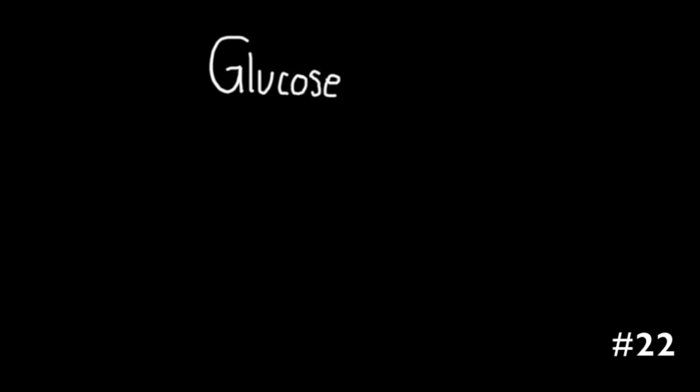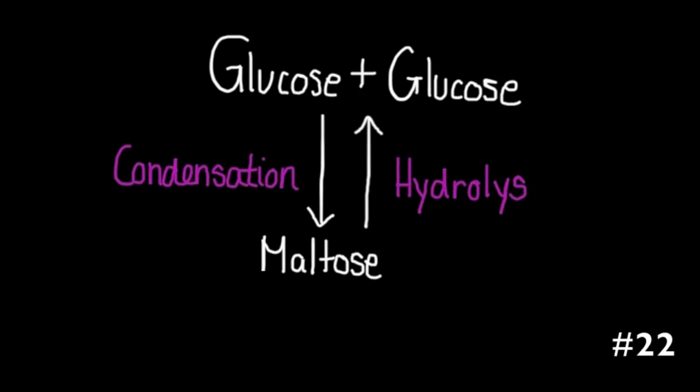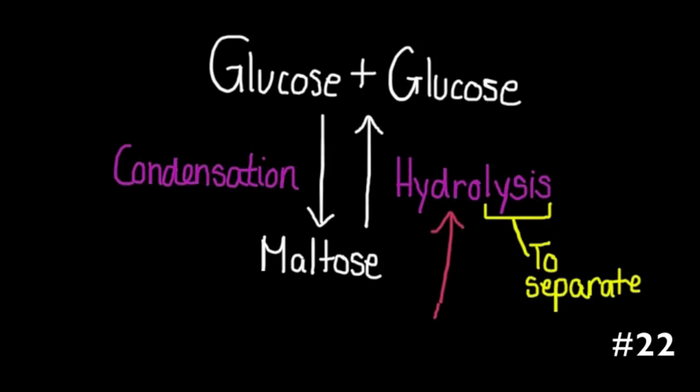On the note of joining monomers together, most students are able to well represent condensation and hydrolysis reactions. For example, condensation reaction is used to join glucose plus glucose to make maltose and water is also produced in the process. Hydrolysis is used to split maltose back into glucose plus glucose. Lysis refers to separate. Most students don't mention, though, that this is aided by enzymes. For example, digestive enzymes break down maltose into glucose plus glucose. That particular enzyme would be maltase.